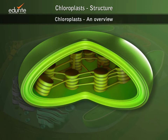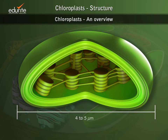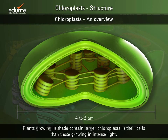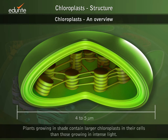Each cell may have 30 to 200 chloroplasts. Although the size of chloroplasts varies from plant to plant, chloroplasts are generally 4 to 5 micrometers in size. Also, plants growing in shade contain larger chloroplasts in their cells than those growing in intense light.